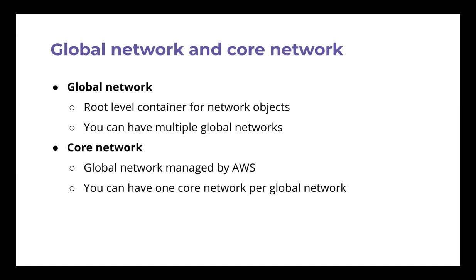A global network is like a logical container for your network objects — right now those are core networks and Transit Gateways, which you can interconnect together. You can have multiple global networks, but one global network can contain only one core network. The core network is the actual Cloud WAN managed by AWS. There was some confusion about this for me because you set it up once and never see these terms again — you just click through them, but there is a bit of a difference.